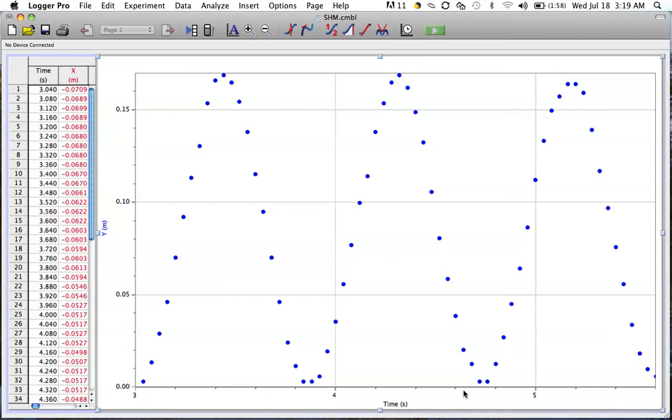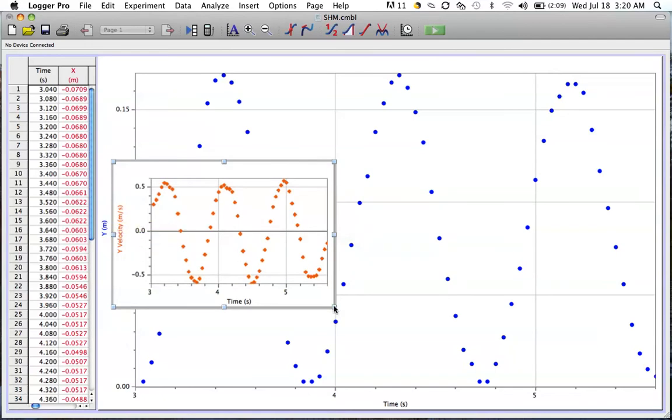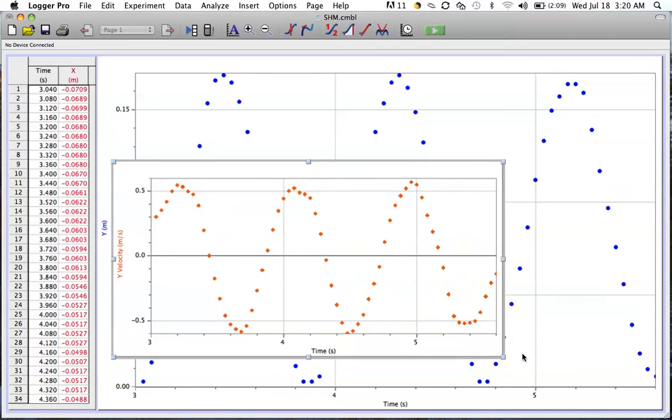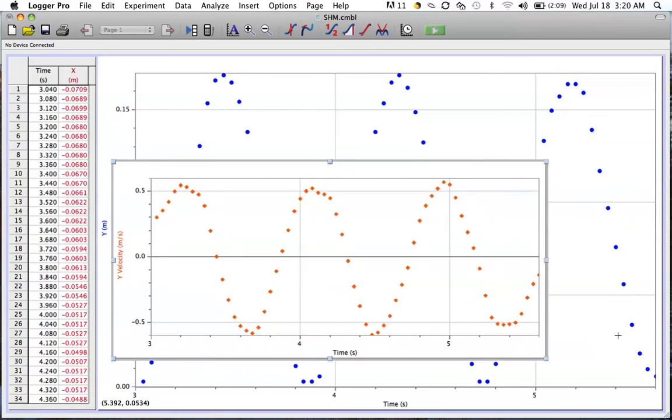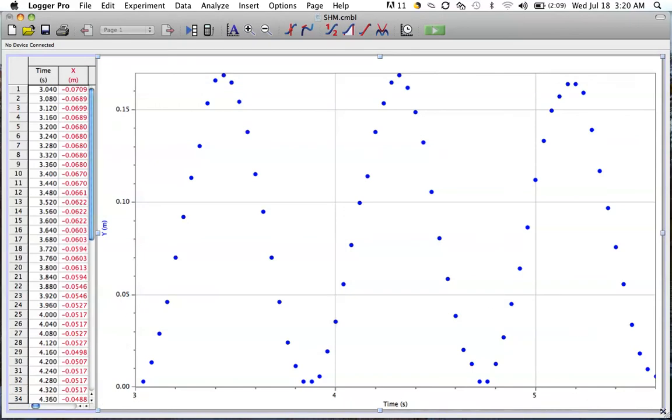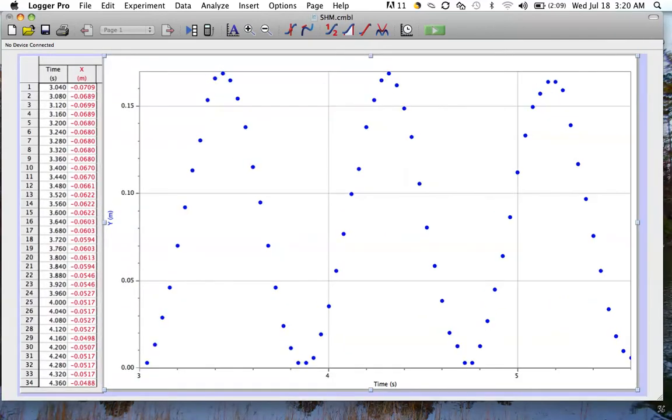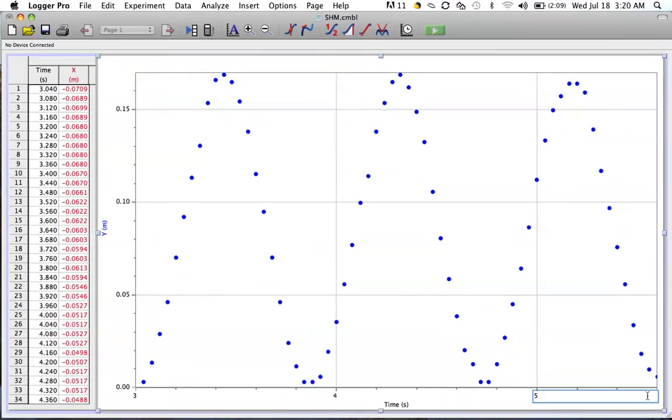Usually with simple harmonic motion, we're also interested in how the velocity and the acceleration change with time. So what I'm going to do is insert another graph and choose the y-velocity so that we can now scale this to where we can see the displacement along the y-axis at the same time that we're looking at the position of the object along the y-axis.